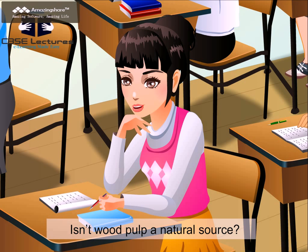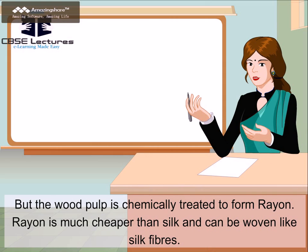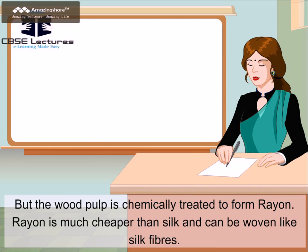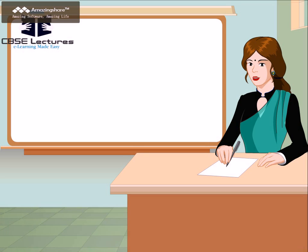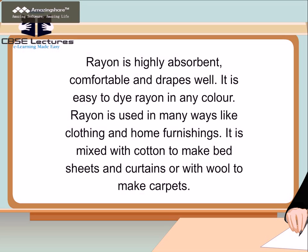Isn't wood pulp a natural source? But the wood pulp is chemically treated to form rayon. Rayon is much cheaper than silk and can be woven like silk fibers. Rayon is highly absorbent, comfortable and drapes well. It is easy to dye rayon in any color. Rayon is used in many ways like clothing and home furnishings. It is mixed with cotton to make bed sheets and curtains, or with wool to make carpets.